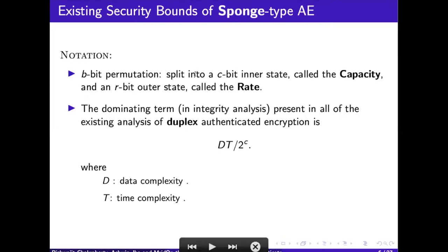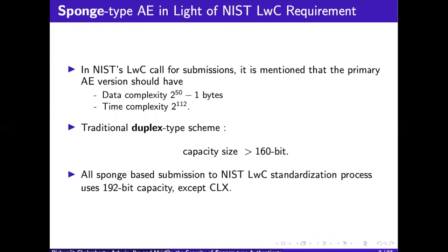Let B be the permutation state size, and split it into a C-bit inner state called the capacity and an R-bit outer state called the rate. The dominating term in all existing analyses of duplex authenticated encryption can be bounded by DT / 2^C, where D is the data complexity and T is the time complexity. The NIST LWC call specifies that the primary AEAD version should have data complexity of 2^(50-1) bytes, that is nearly 2^(53-1) bits, and time complexity of 2^112. So to achieve the required security, any traditional duplex-type scheme must have capacity greater than 160 bits.